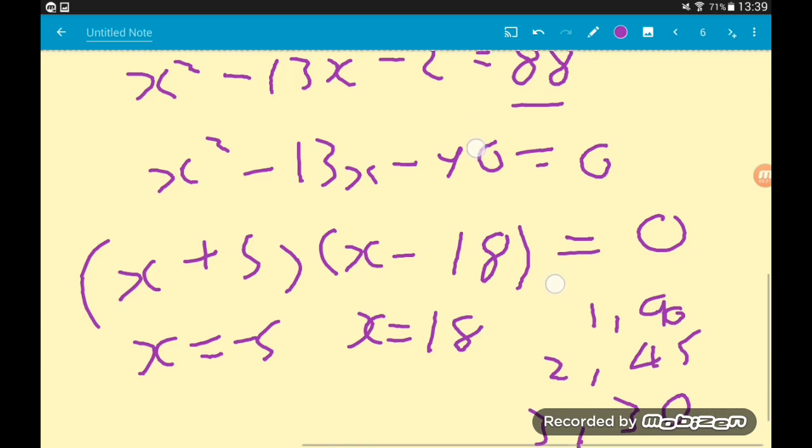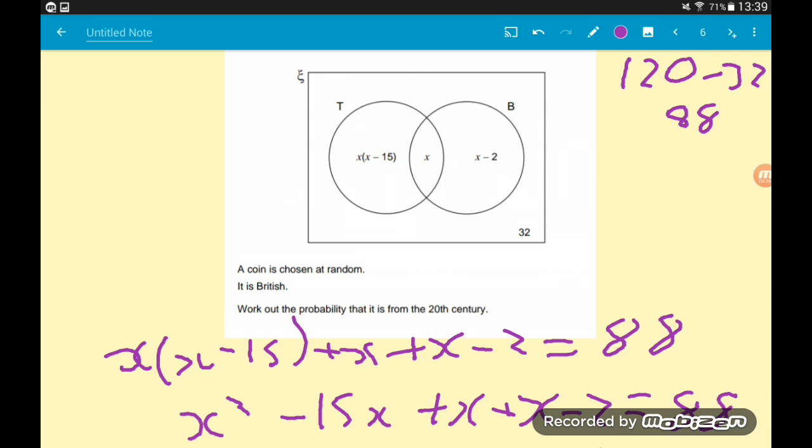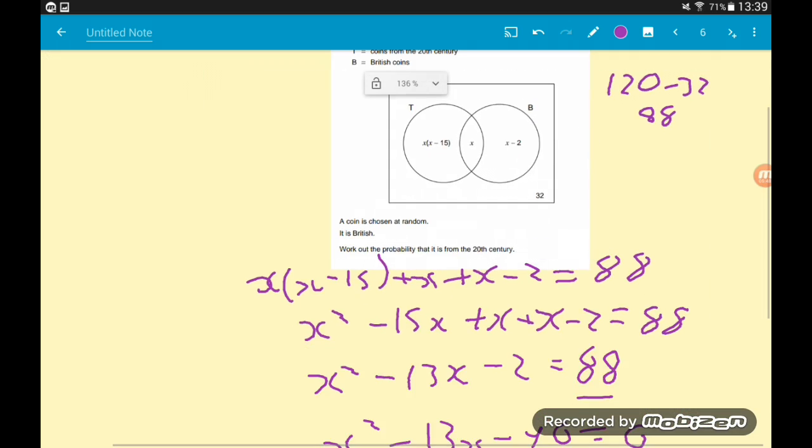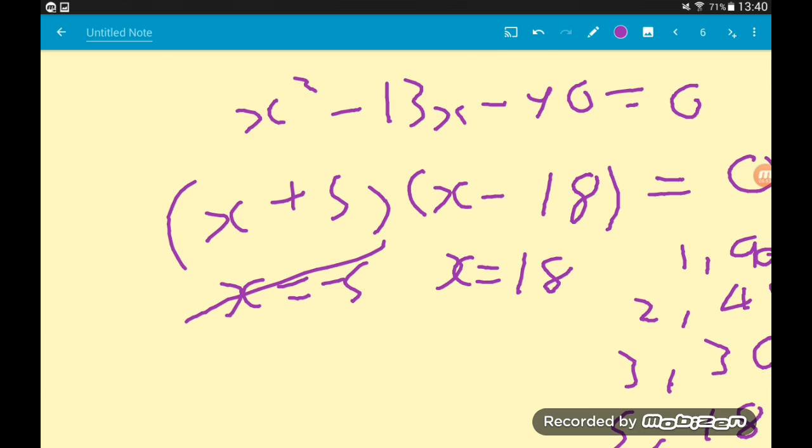If we go back to the Venn diagram, remember in the middle we have x coins that are 20th century and British. It doesn't make sense to have minus 5 coins that do that. So it doesn't make sense to have a negative value for x, which means the only value of x that we care about is x equals 18.